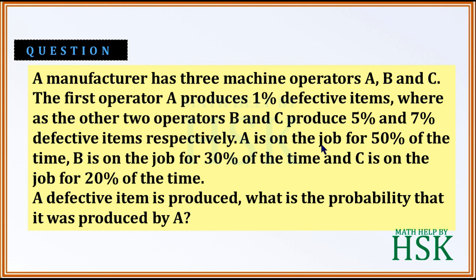A is on job 50% of the time, B is on job 30% of the time, and C is on job 20% of the time. This means A produces 50% of the total items, B produces 30%, and C produces 20% of the total items produced.